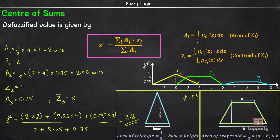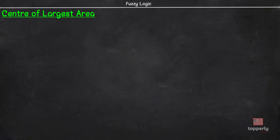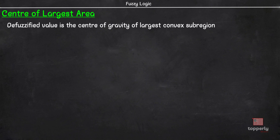Next, let us learn about the method of centre of largest area. As per this method, if the output fuzzy set has at least two convex subregions, then the centre of gravity of the convex subregion with the largest area is used to obtain the defuzzified value.